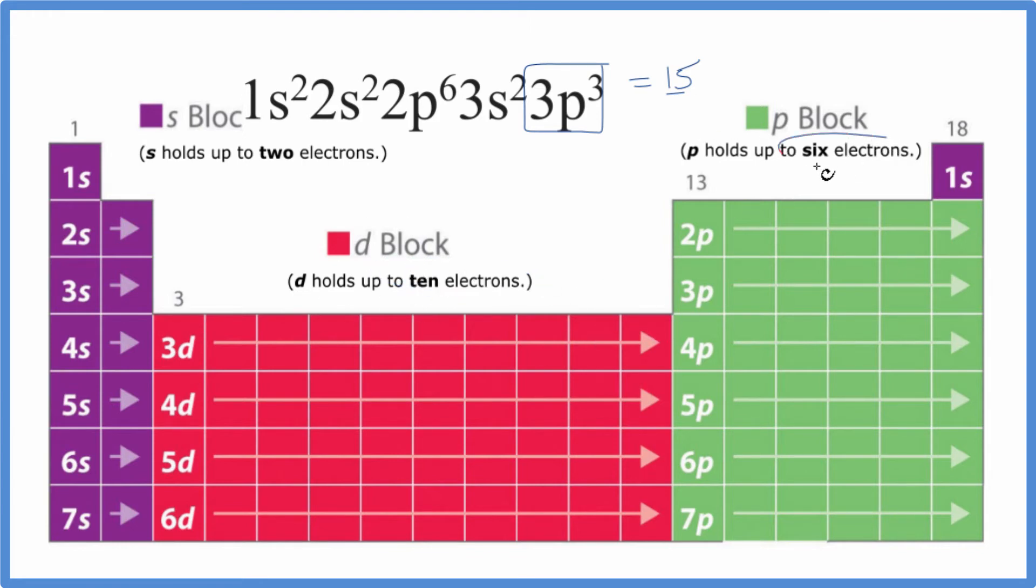And then for p, which holds 6 electrons, we have 1, 2, 3, 4, 5, 6.